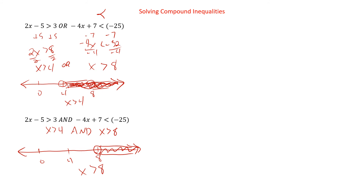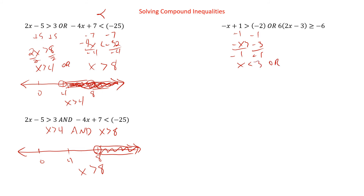So the difference between AND and OR here is: do we count that four to eight stuff? Now we have this one — it's another OR. We can subtract, so we have negative x is greater than negative three. Divide by negative one, x is less than three. OR, here — being that we have a six and a six, I'm going to divide by six to get two x minus three is greater than or equal to negative one. Add three: two x is greater than or equal to two. Divide by two, x is greater than or equal to one.